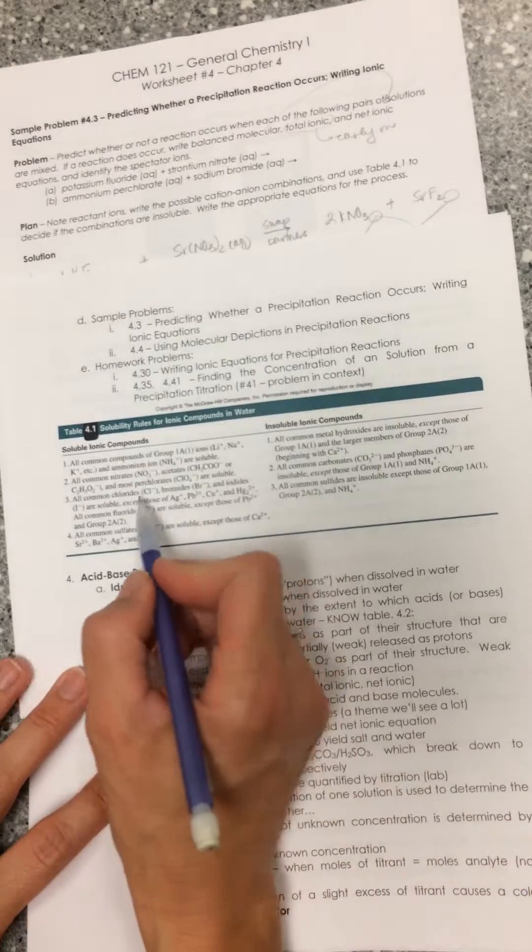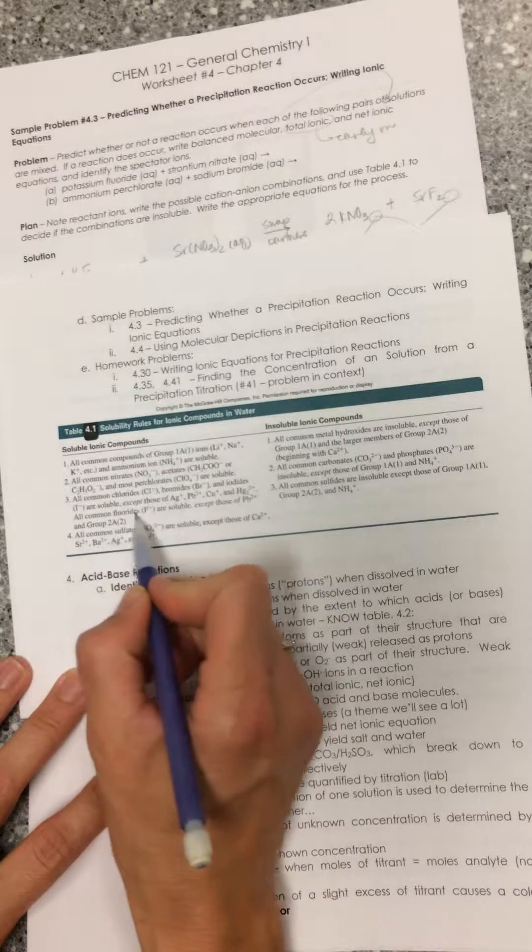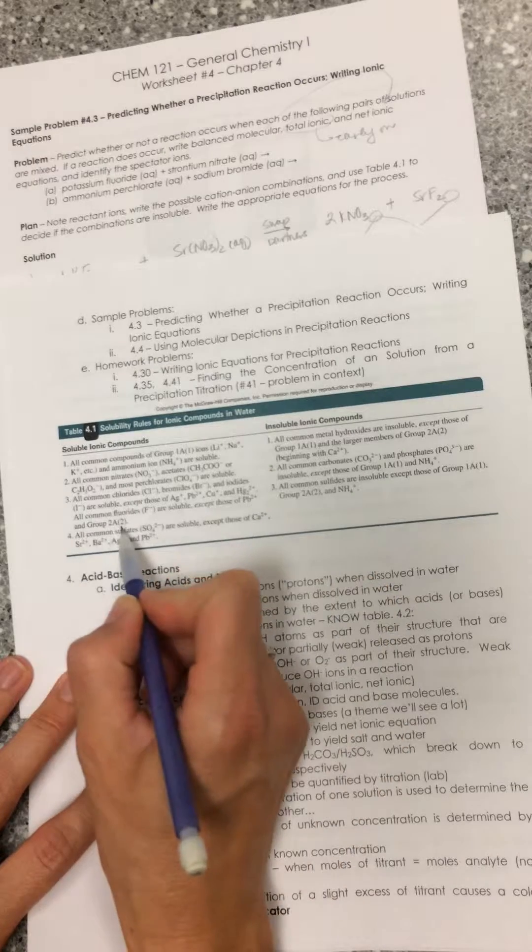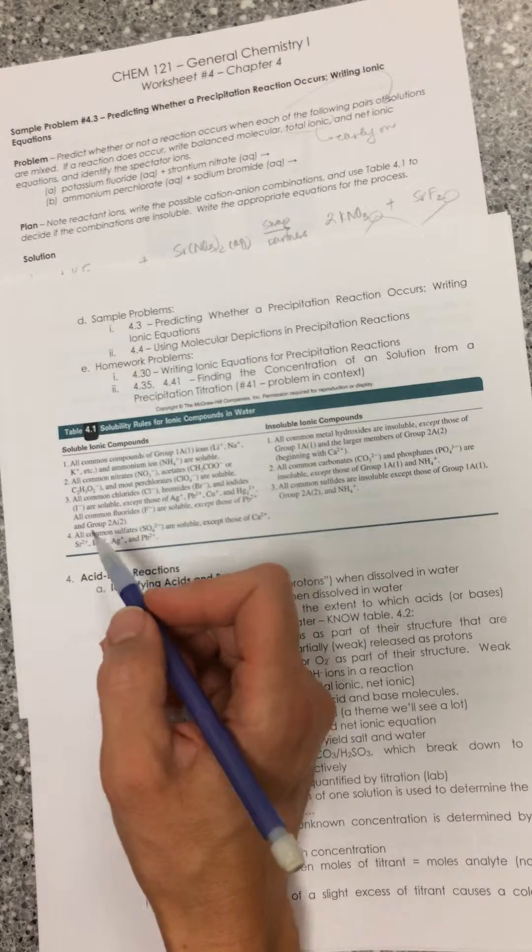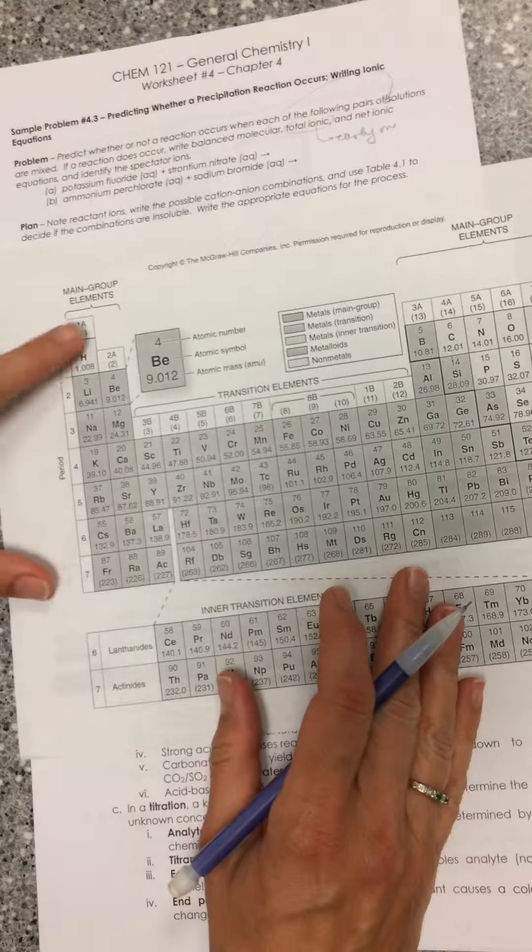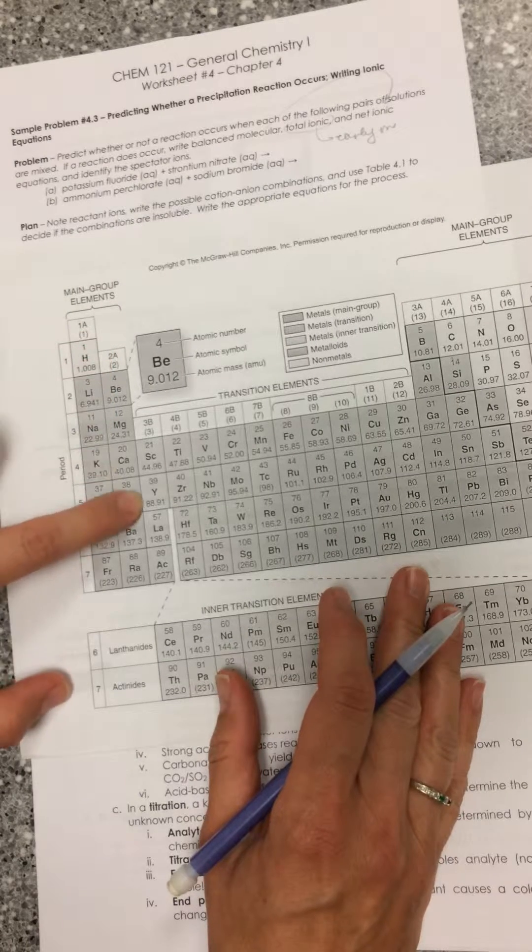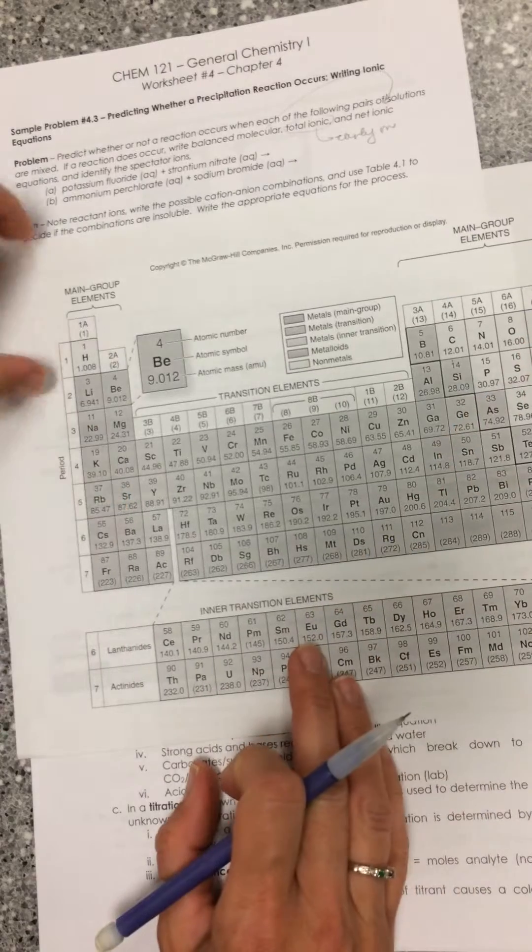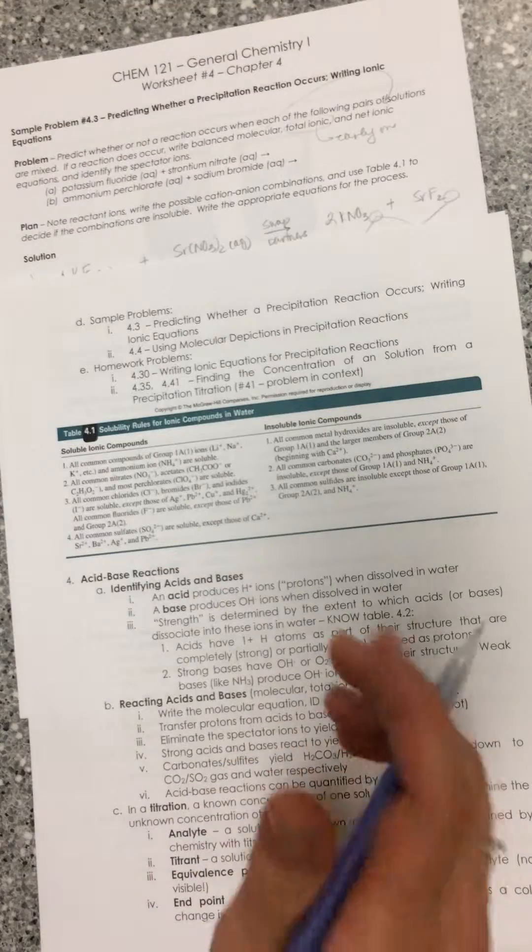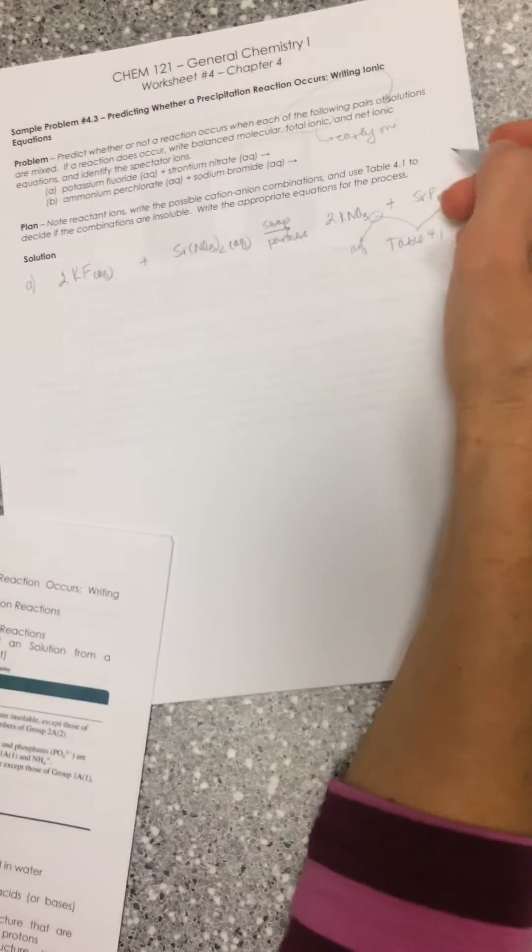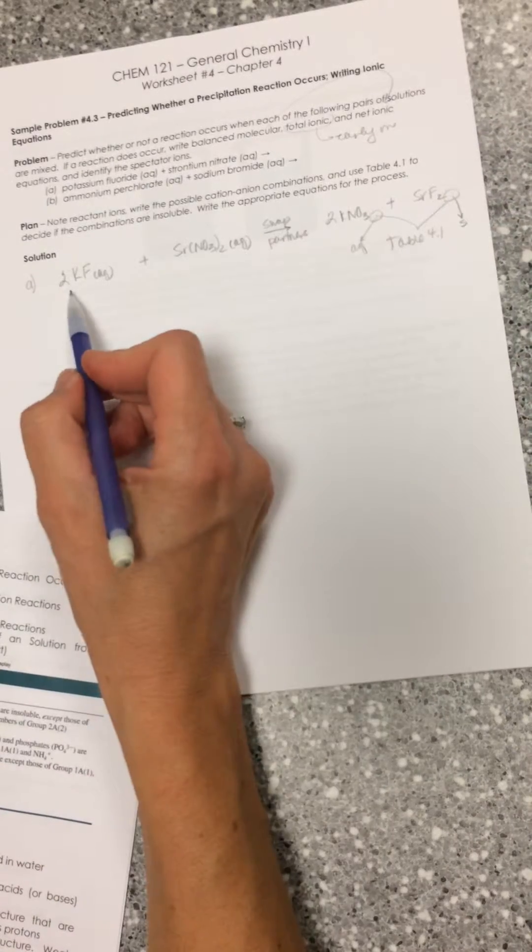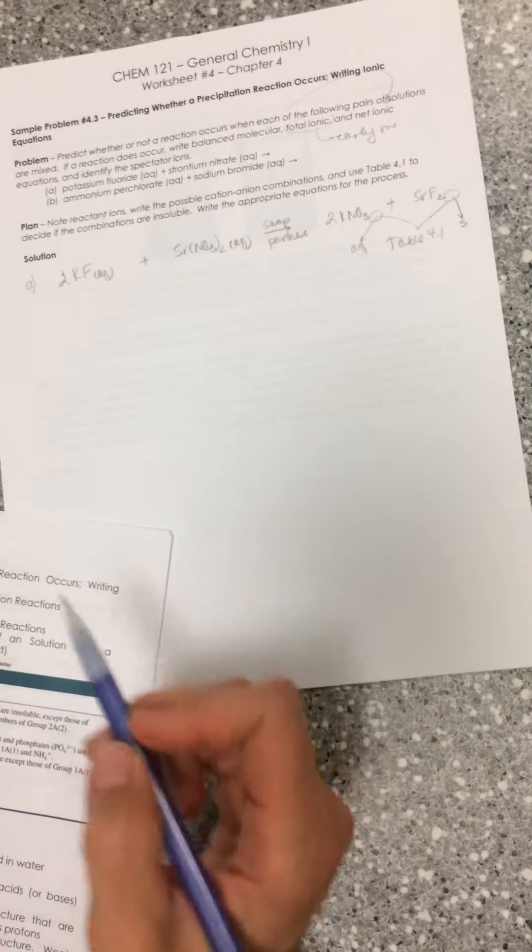Strontium fluoride - we need to find fluorides. All common fluorides are soluble except those of lead and group 2A. That's why I grabbed this periodic table. If we see group 2A, there's strontium. When you have strontium mixed with fluorine as strontium fluoride, that's insoluble, so this one's going to be an S.